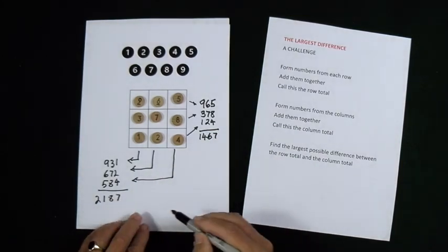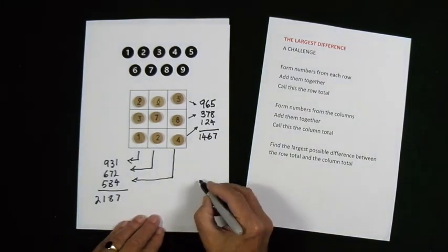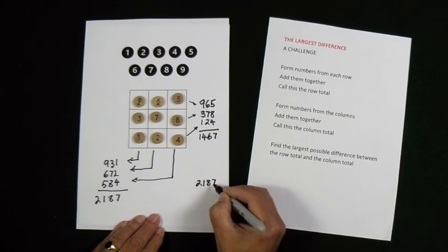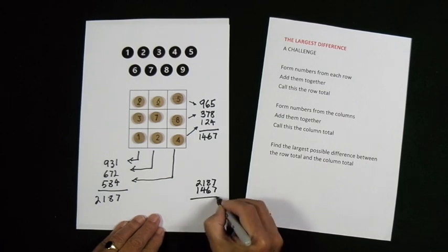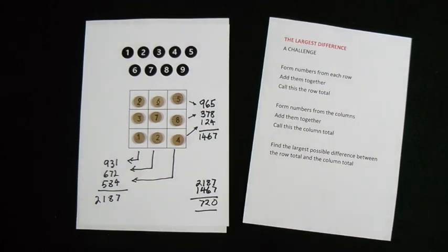And now I've got two totals. I'm going to take each of those totals and I'm going to find the difference between them. So I'm subtracting now. The difference between the two totals is seven hundred and twenty.